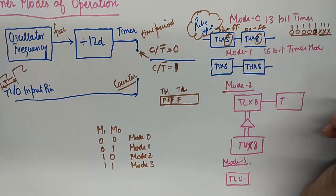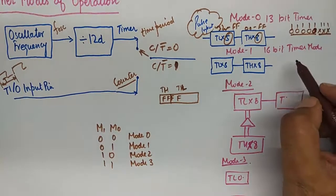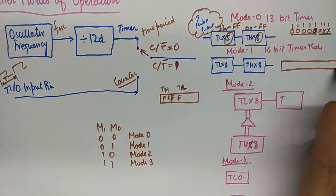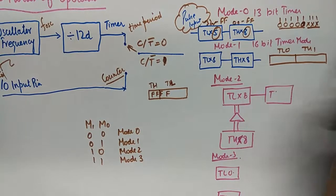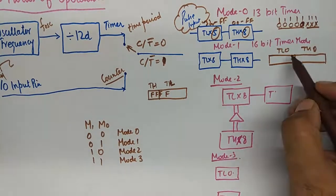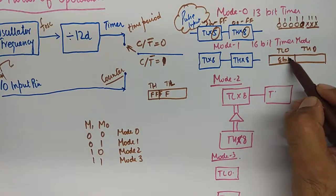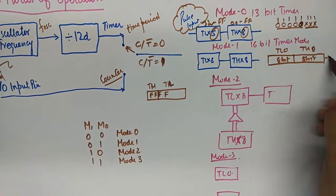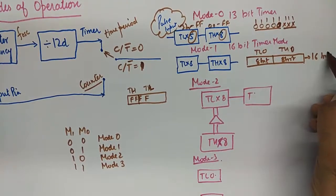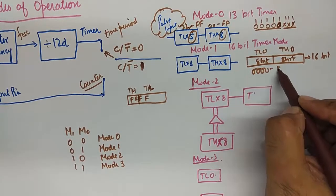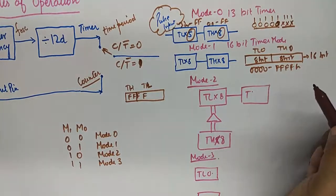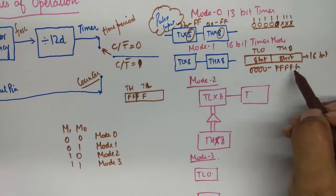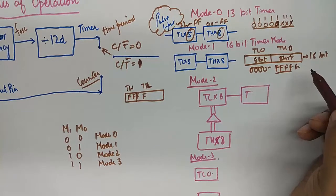And mode 1 is 16-bit timer where both timer registers TL0 and TH1 will be completely fully utilized. So 8-bit timer here, 8-bit timer, together they will form a 16-bit number which will go from 0000 to FFFH. Although you can put any intermediate number, it will eventually go up to FFFH and will overflow there.